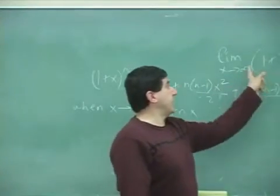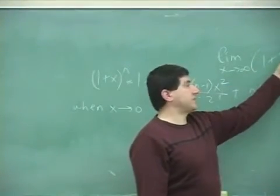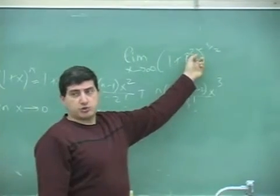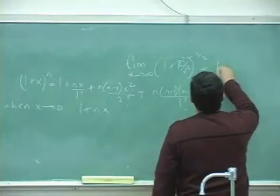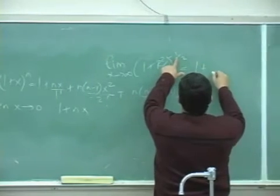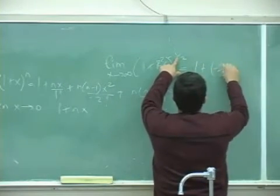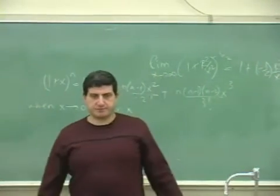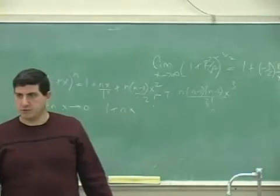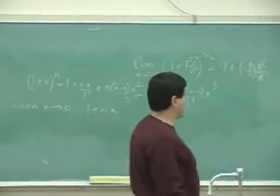So when you want to see the behavior of a function when this thing is close to zero, you can just do that. You can add 1 plus n, which is this, x. That's it. Only that survives. You see? So now you can do that.